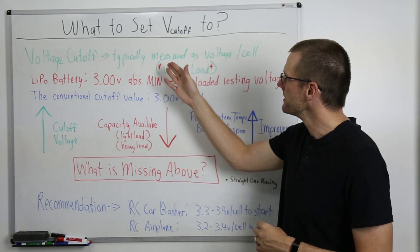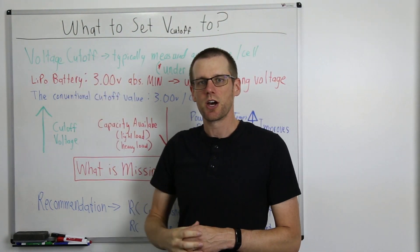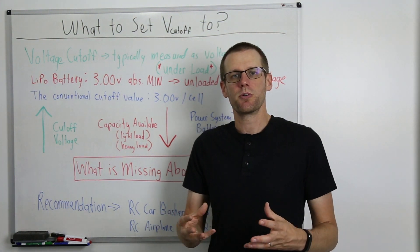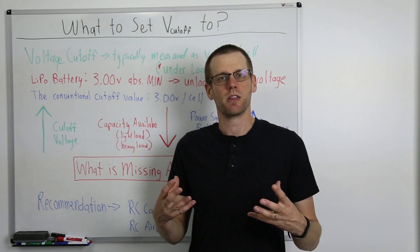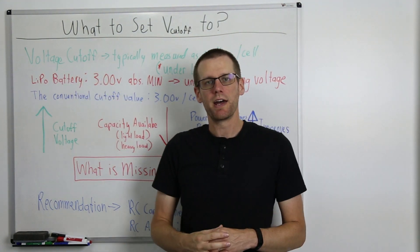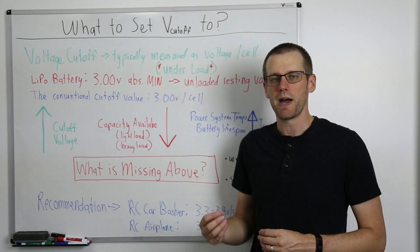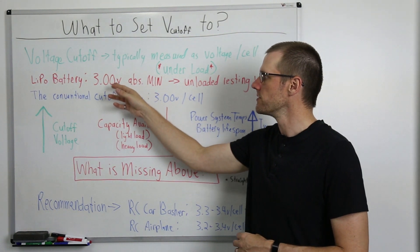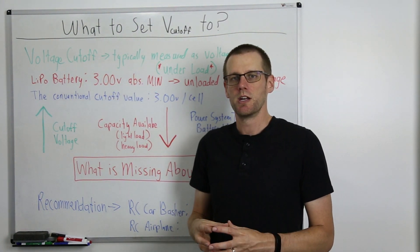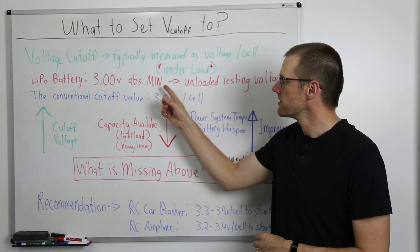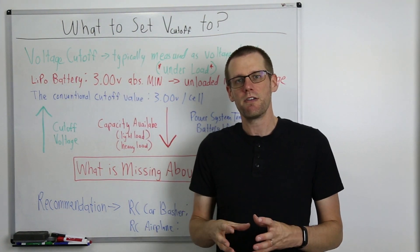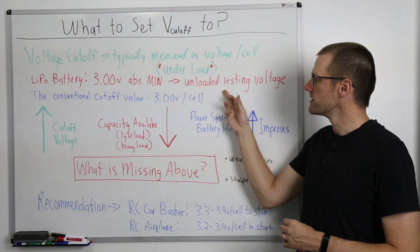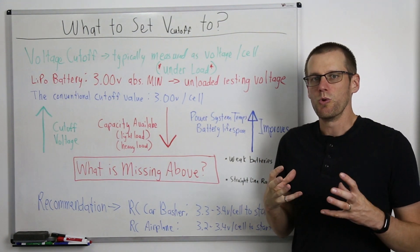Now up on the board, we have the typical measured value of a voltage cutoff is a voltage per cell. And these types of values can be programmed into most common ESCs found in the market. Now let's talk about our lipo battery. Our lithium polymer batteries that we typically use for power systems in RC today is set at about 3.00 volts as an absolute minimum. Now it's very key to understand that that is an absolute minimum. You never ever even want to hit this voltage value. Another point here is that this represents an unloaded or resting voltage.